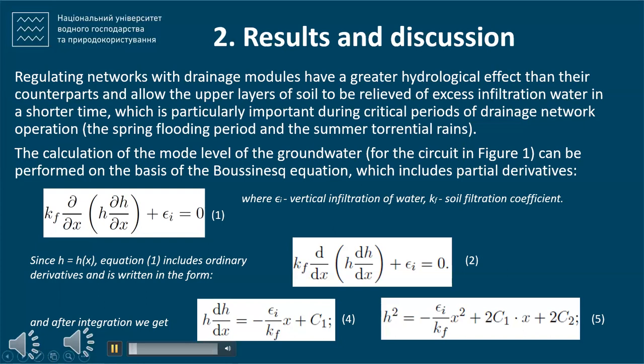In the first equation, epsilon is the vertical infiltration of water, Kf is the soil filtration coefficient, and h is equal to h(x). The first equation includes ordinary derivatives and is written in the form of the second equation. After integration, we obtain the third equation.